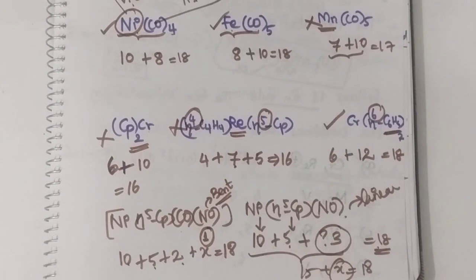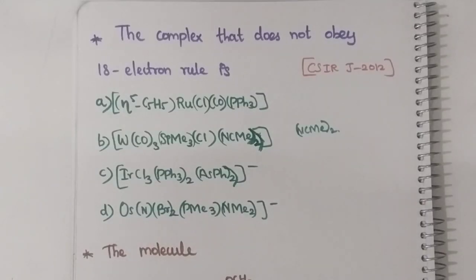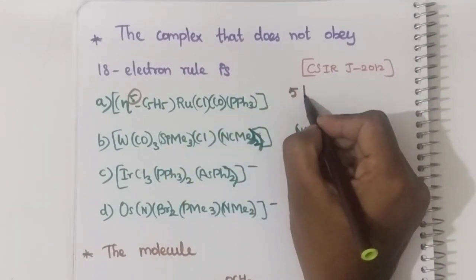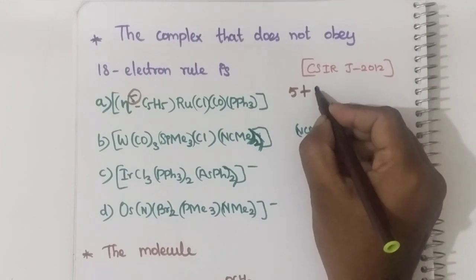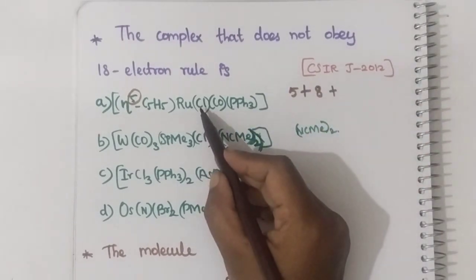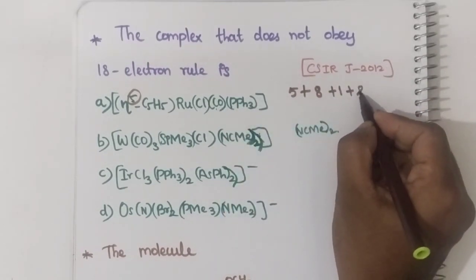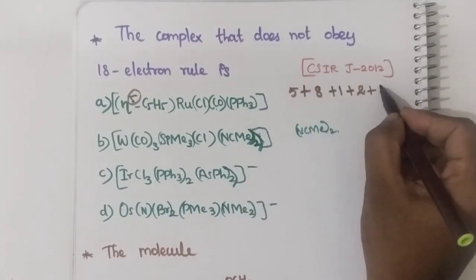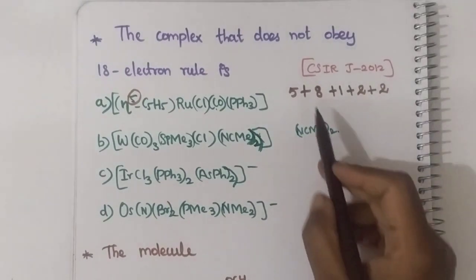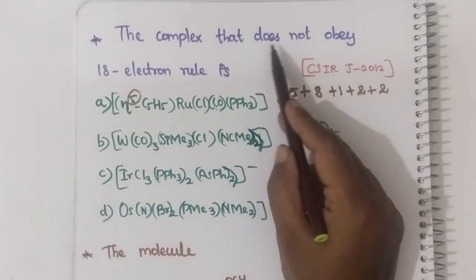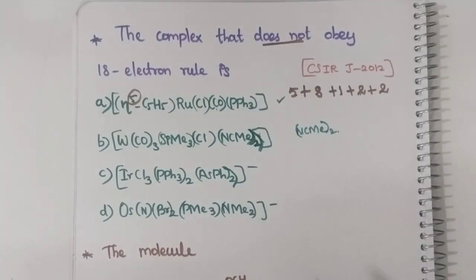Now let us solve previous year CSIR and GATE questions. The first question: which complex does NOT obey the 18 electron rule? Option A: Ru(η5-C5H5)(Cl)(CO)(PPh3) — Ru has 8 valence electrons (iron family), Cp = 5, Cl = 1, CO = 2, PPh3 = 2. Total: 5 + 8 + 1 + 2 + 2 = 18. It obeys the 18 electron rule, so this is not the answer.